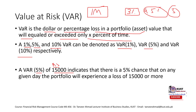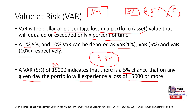For example, a VAR5 of ₹15,000 means there is a 5% chance that on any given day the portfolio will experience a loss of ₹15,000 or more. Equivalently, there is a 95% chance that losses would be less than ₹15,000, and only a 5% chance that losses would equal or exceed ₹15,000.